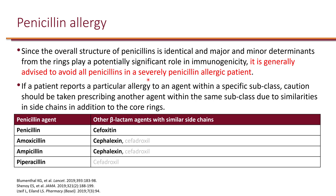When it comes to cross-reactivity via similar sidechains, penicillin itself has a sidechain similar to cefoxitin, meaning a non-severe reaction to penicillin increases likelihood of a similar reaction to cefoxitin. For amoxicillin and ampicillin, their sidechain is similar to cephalexin, so a non-severe reaction to one increases risk of a similar reaction to cephalexin.